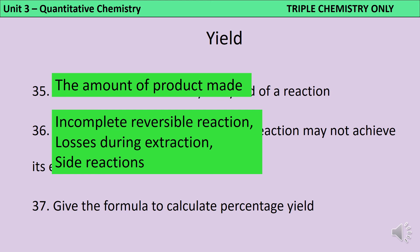To calculate percentage yield, we take the total amount of product that you actually made and divide it by the maximum theoretical yield. In other words, the amount you expected to make. And then we turn that into a percentage by multiplying by 100%.